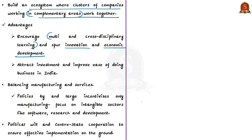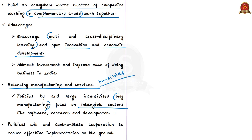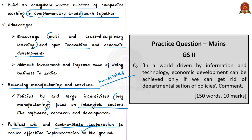There is also the larger issue of balancing manufacturing and services. Present-day policies largely incentivise only manufacturing. Policy should also focus on intangible sectors like software, research and development, and other services, which is important to encourage innovation and technological development. Apart from all these, political will and centre-state cooperation are needed to ensure effective implementation on the ground.